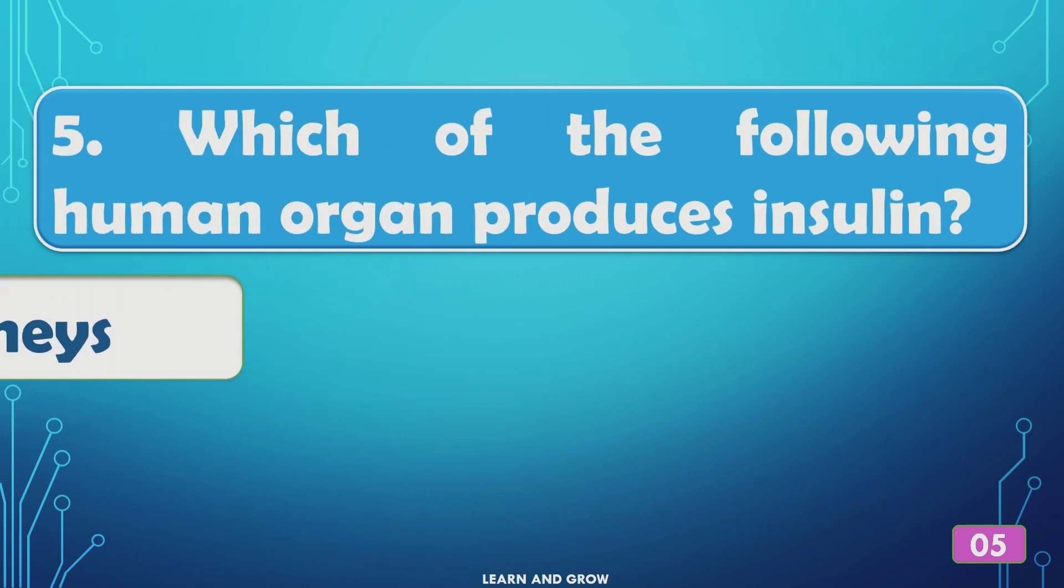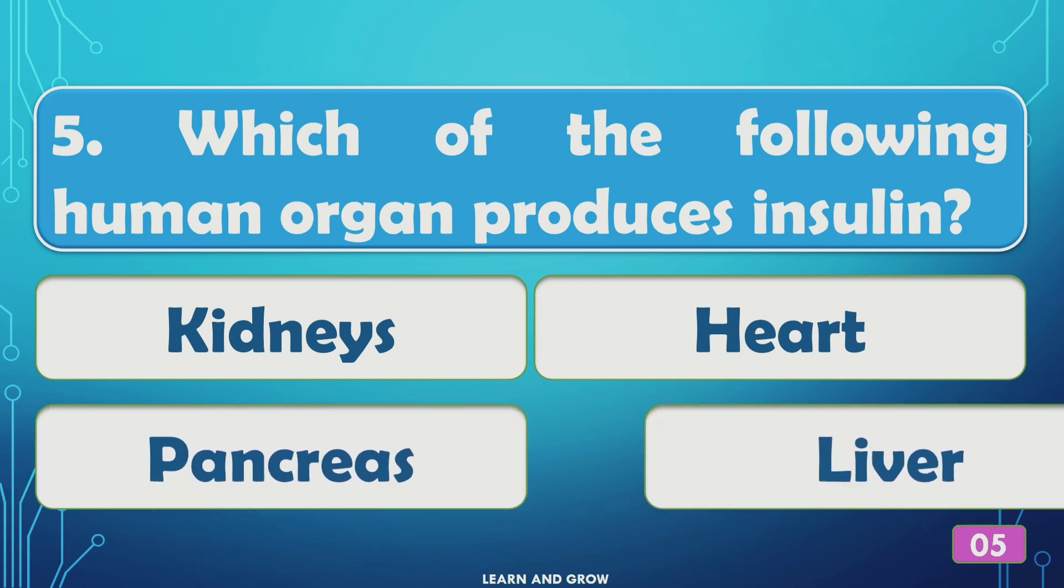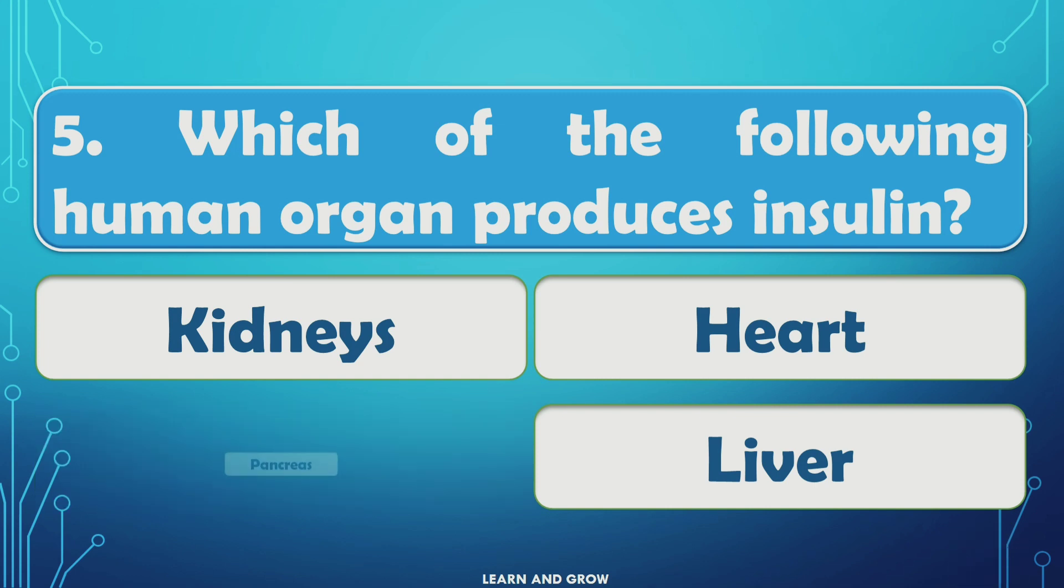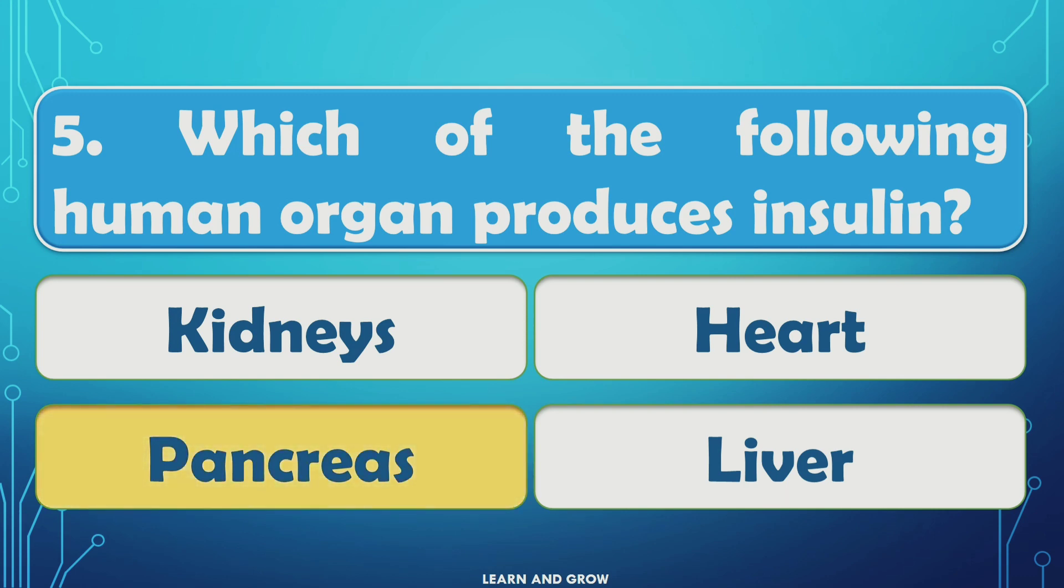Which of the following human organ produces insulin? The right answer is option C, pancreas.